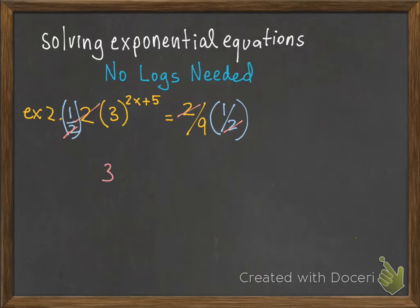I'm going to be left with 3 raised to the 2x plus 5 power equals 1/9. So we have that yucky fraction there. What we want to do is get that 1/9th to look like something of the base of 3.